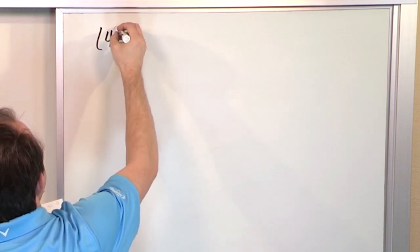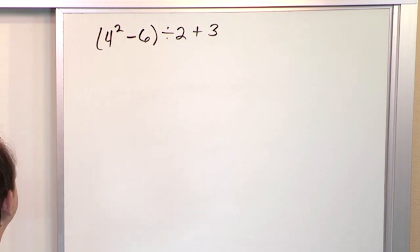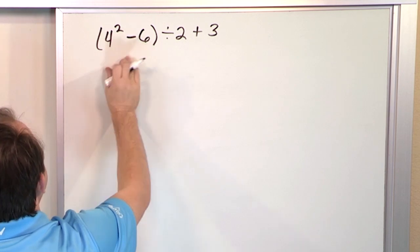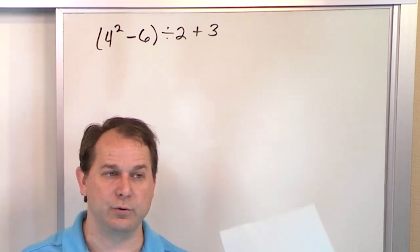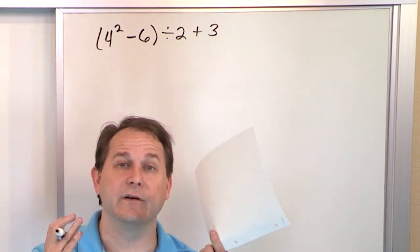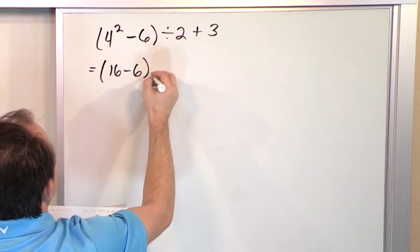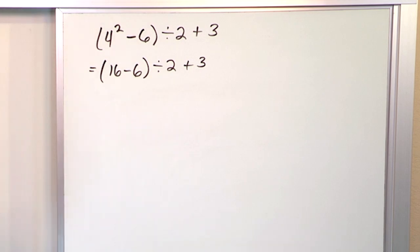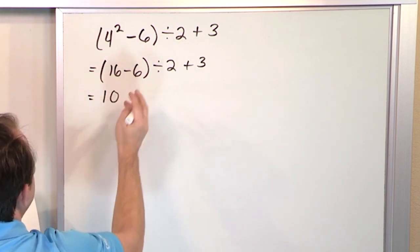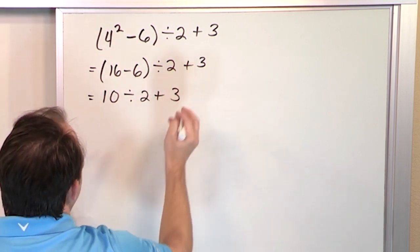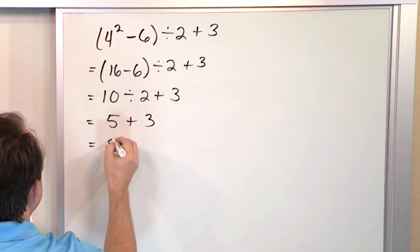Next problem: what if we have the quantity 4 squared minus 6, in parentheses, divided by 2 plus 3? We look at what's inside the parentheses because parentheses always come first. But inside we have an exponent and subtraction — exponents win. So within the parentheses: 4 times 4 is 16 minus 6. Now we can do the subtraction: 16 minus 6 is 10. Drop the parentheses. Now 10 divided by 2 plus 3. Division comes before addition: 10 divided by 2 is 5, plus 3 gives 8.